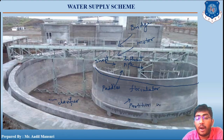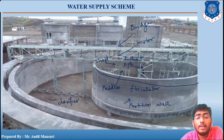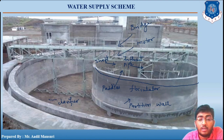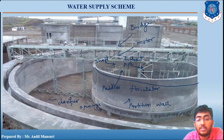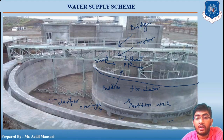This is the partition wall. The water will enter the clarifier from below the partition wall. These are the openings you can see - there will be openings all around the flocculator, below the partition wall.